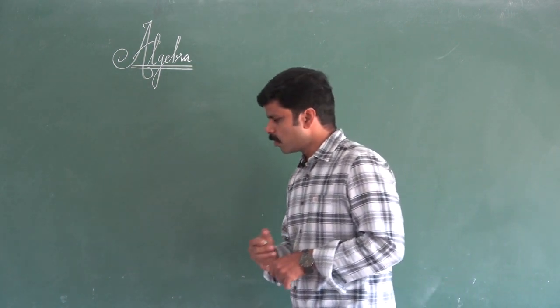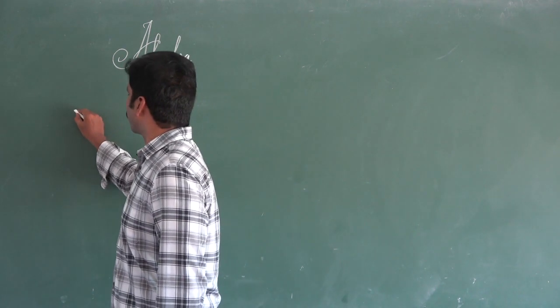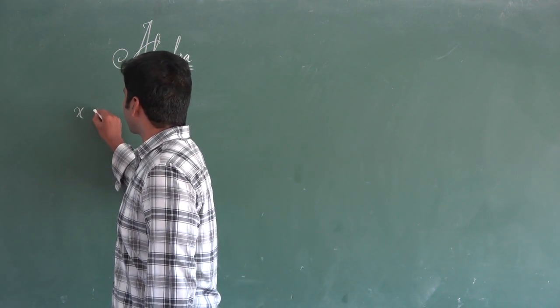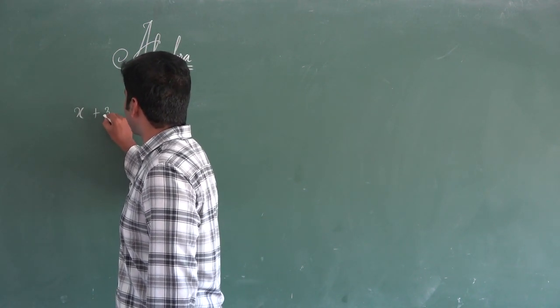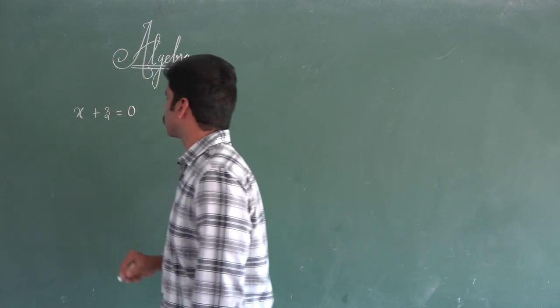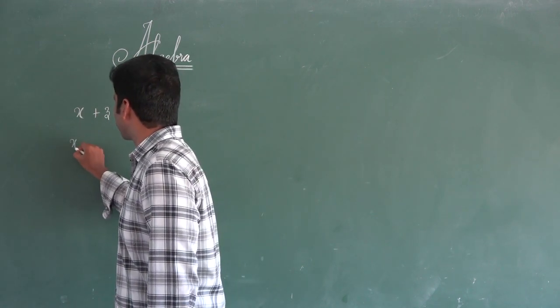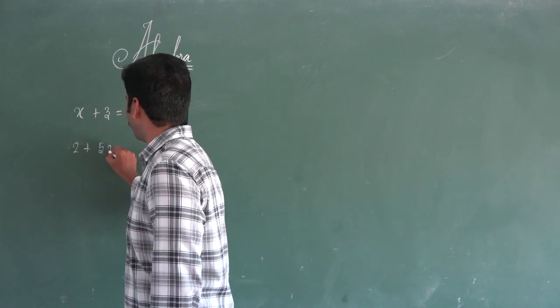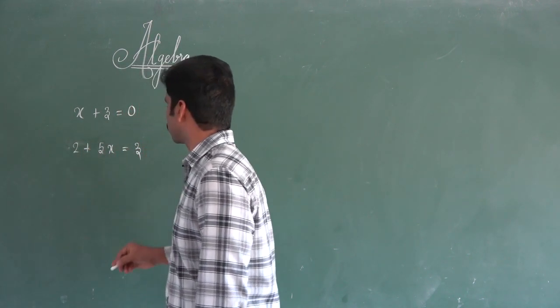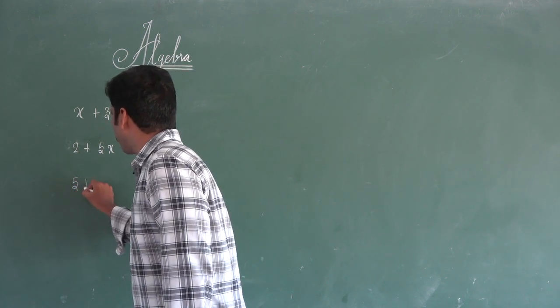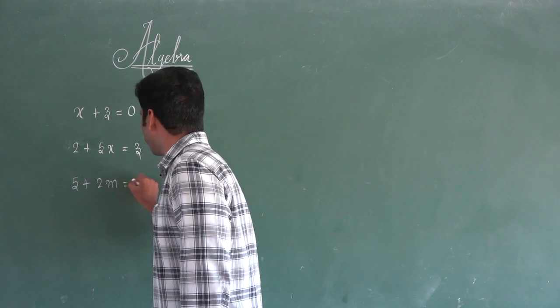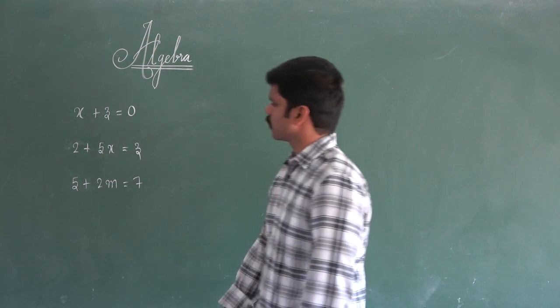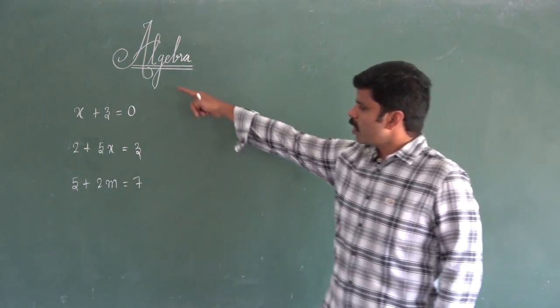First, listen to this. I will write three equations: x plus 3 equal to 0, 2 plus 5x equal to 3, and 5 plus 2m equal to 7. Now, three equations.